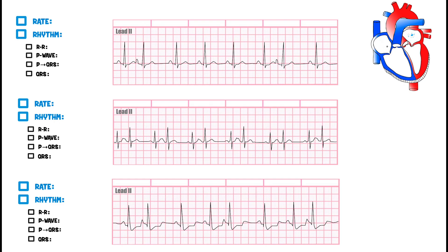In the heart, we have a structure in the right atrium called the SA node. Over near the top of the interventricular septum, you have your AV node, then the bundle of His, then your right and left bundle branches. Generally the SA node is the pacemaker of the heart — it sends action potentials to the AV node at a specific rate, about 60 to 80 beats per minute.